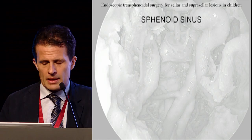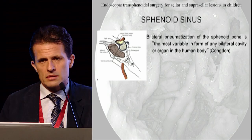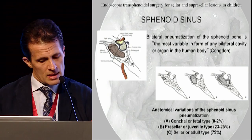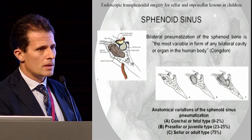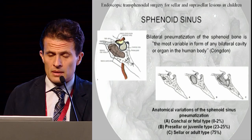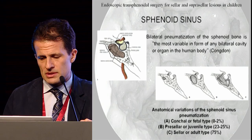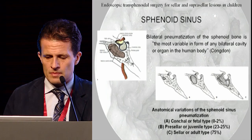We are crossing the sphenoid sinus, and we should know — especially for the young people — that the sphenoid sinus is a variable anatomic structure. Three types are the most frequent ones we experience. The first is what we call the concal type. It can be just in front of the sella, what we call the juvenile presellar type. Or finally, the usual type — the so-called sellar type of sphenoid sinus.